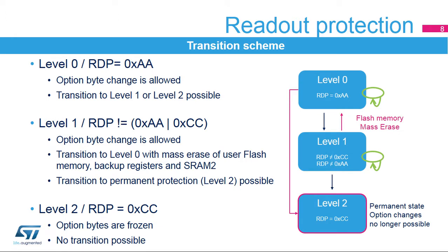This slide shows the possible transitions between each readout protection level. It is always possible to raise the protection level, but regression is only possible between Level 1 and Level 0, with the consequence of a full user flash erase operation. Note that the RDP level is coded in one option byte: Level 0 is coded by a 0xAA value, Level 2 is coded by a 0xCC value, and Level 1 is coded by any value other than 0xAA or 0xCC.